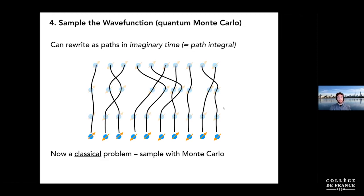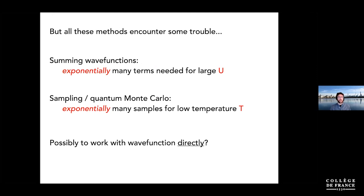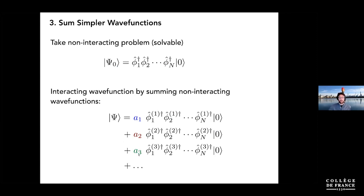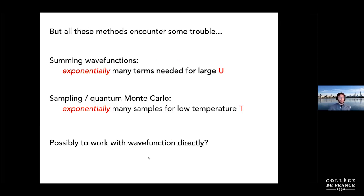All these methods can work really well in their own domains, but they all encounter some kind of limitation. As my colleague Olivier Parcolet likes to say: the many-body problem is an exponential problem; there's always an exponential hiding somewhere. For the configuration interaction approach, you need exponentially many terms as you increase U. For quantum Monte Carlo, as you go to lower and lower temperature, eventually for most systems you need exponentially many samples to get good statistics — that's called the sign problem.